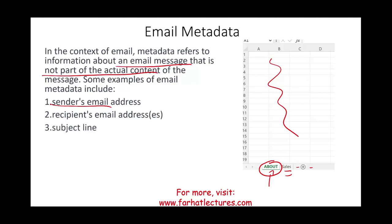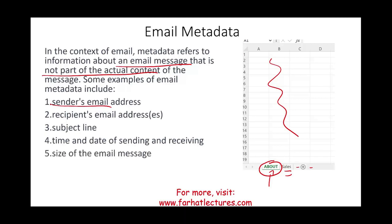Metadata in email includes the subject line, time and date of sending and receiving, size of the email, maybe the server, and so on — none of it is part of the message itself. The message itself is the data, but you have information about that data. Because if you look at the message and don't know who the sender is, who the recipient is, or what the subject line is, you may not be able to decipher it. The metadata gives you information about the data.